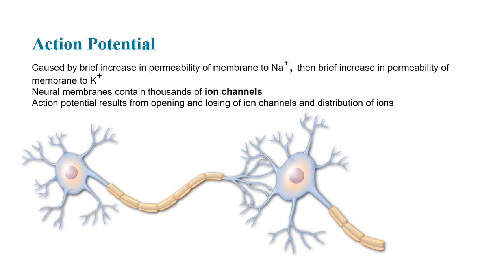The action potential is caused by a brief increase in membrane permeability to sodium — allowing sodium in — then a brief increase in permeability to potassium — allowing potassium out. The neural membrane contains literally thousands of ion channels, so ions flood through in large numbers. The action potential results from the opening and closing of these ion channels and the redistribution of ions, with firing driven by the charge switch as sodium enters and potassium exits.